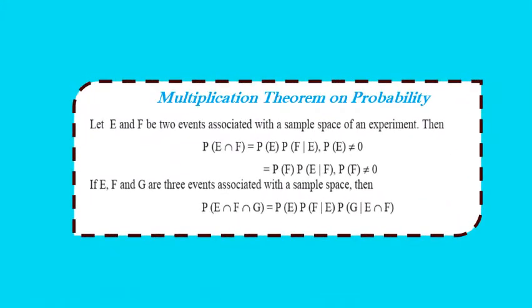The multiplication theorem on probability states that if E and F are two events associated with the same sample space of an experiment, then P(E∩F) = P(E) × P(F|E), provided P(E) ≠ 0, or P(E∩F) = P(F) × P(E|F), provided P(F) ≠ 0.